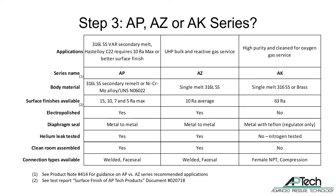Secondary remelt 316L stainless steel is higher purity and has less inclusions than single-melt 316L stainless steel. The AP series offers better optional surface finishes than the AZ series. The AZ series single-melt 316L stainless steel is a more cost-effective solution than the AP series. Like the AP series, it is also electropolished, features metal-to-metal diaphragm seals, is helium leak tested, and clean room assembled. The AK series is used for high purity and clean for oxygen gas service applications and features NPT or compression fittings. The AK series is available in single-melt 316L stainless steel and brass, is more cost-effective than the AP and AZ series, and AK products are not electropolished. AK series regulators feature a metal with Teflon diaphragm seal, and AK series products are nitrogen leak tested and not assembled in a clean room.